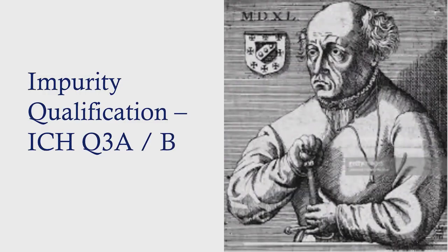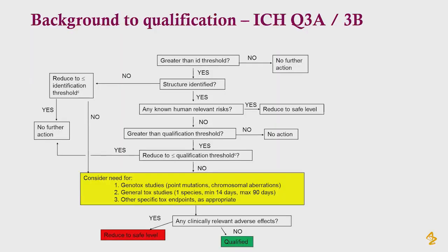If we begin with consideration of the ICH Q3A and B guidances, these are the guidances which refer to setting specification limits and controlling the levels of impurities — in Q3A for drug substance and in Q3B for drug product. The next slide shows a decision tree which can be found in both of those sets of guidance, and what companies can do is work through the decision tree with regard to individual impurity levels.